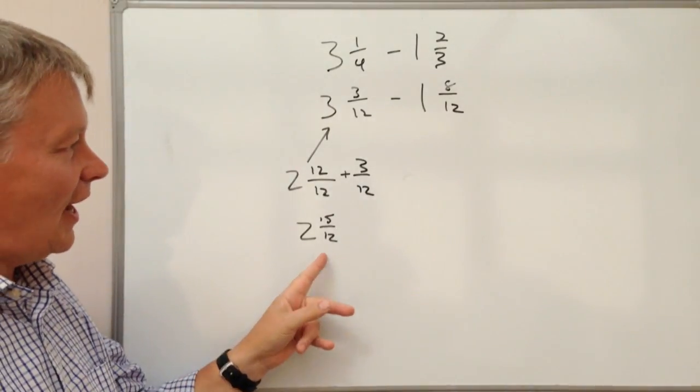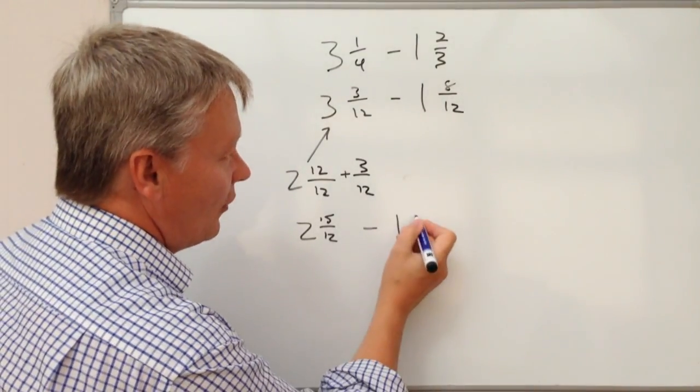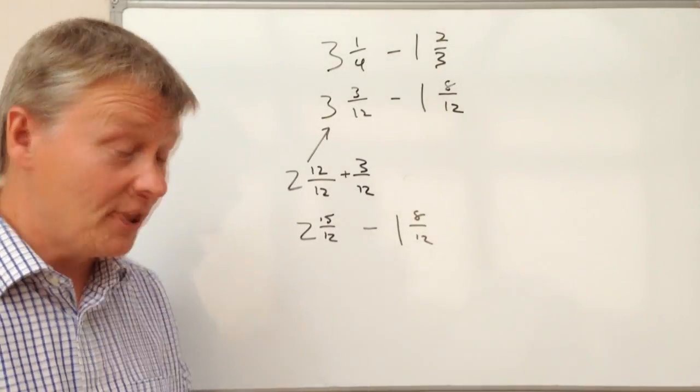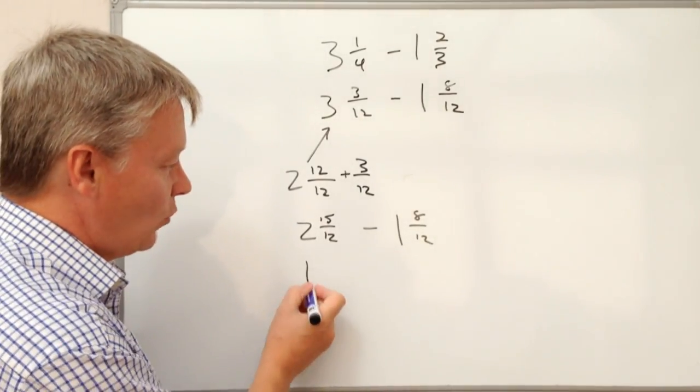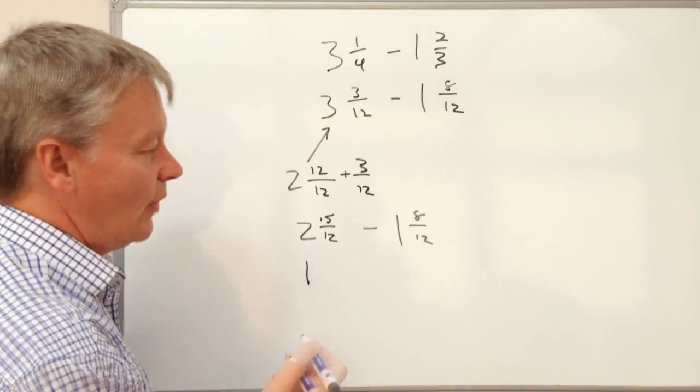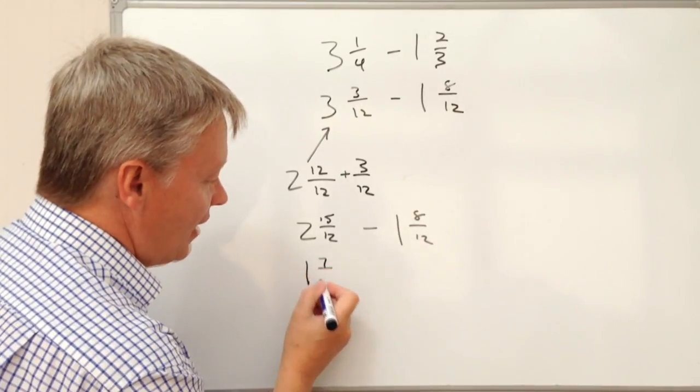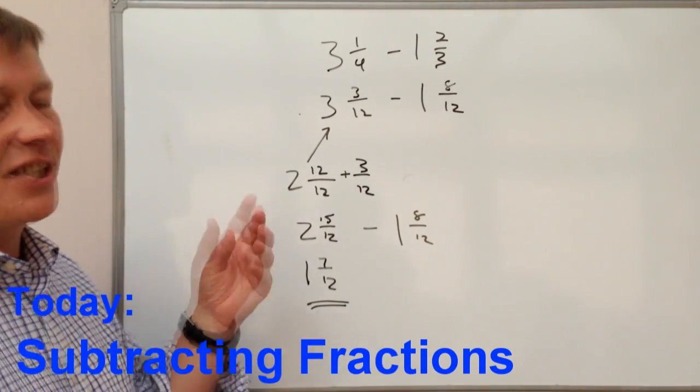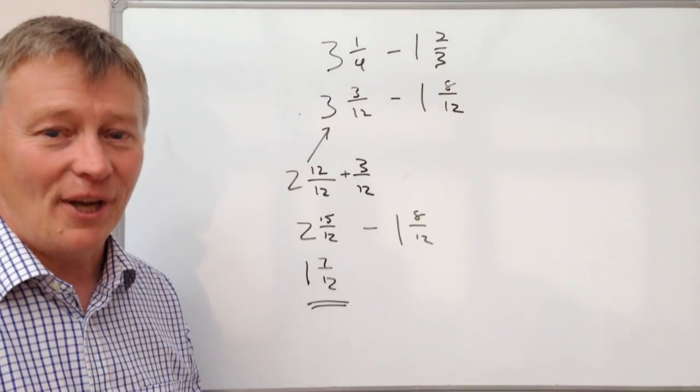Now, if it's that, it means when I take away the 1 and 8/12, I'm in a much stronger position to be able to do it. So 2 take away 1 is 1, and 15/12 take away 8/12 is going to be 7/12. And that would be the answer to this slightly tricky exam paper question.